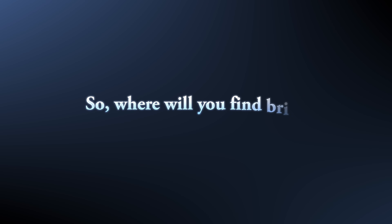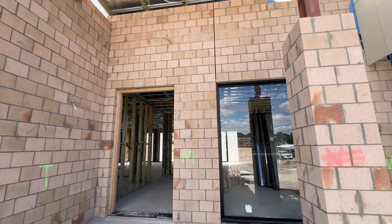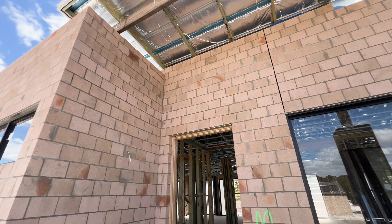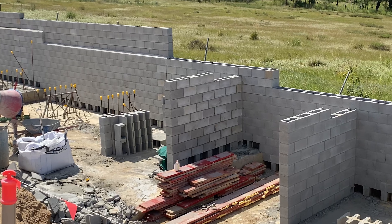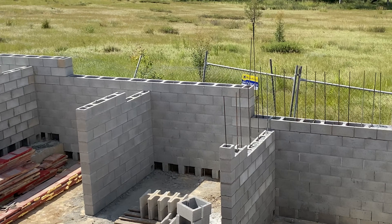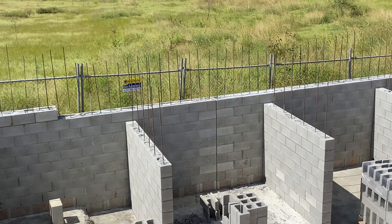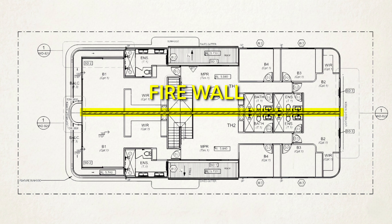So where will you find brick and block masonry? It's everywhere — from the majority of residential homes, whether full double brick or brick veneer, to low-rise and medium-rise commercial and residential buildings, block retaining walls, and boundary and fire separation walls. When it comes to fire separation between townhouses, while you can technically use timber walls, engineers often prefer concrete block walls because it helps with the lateral stability of the building.